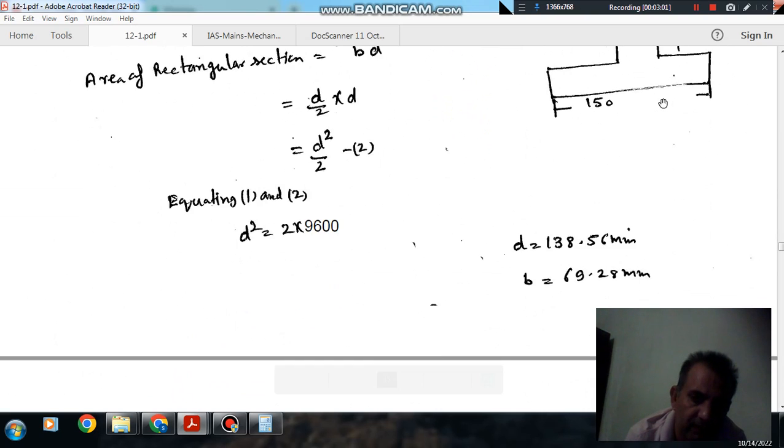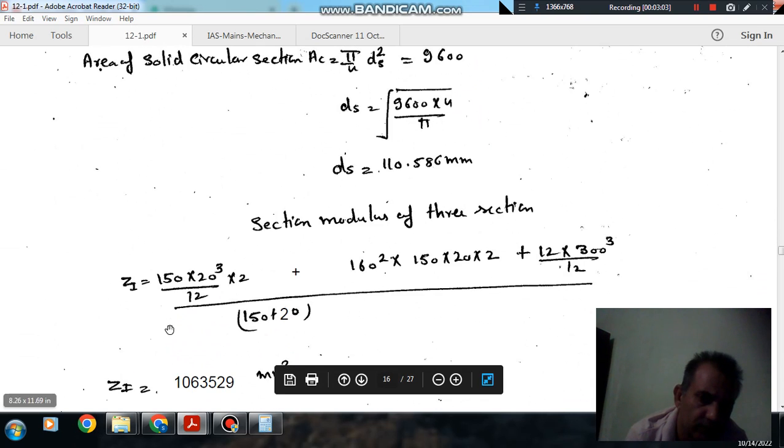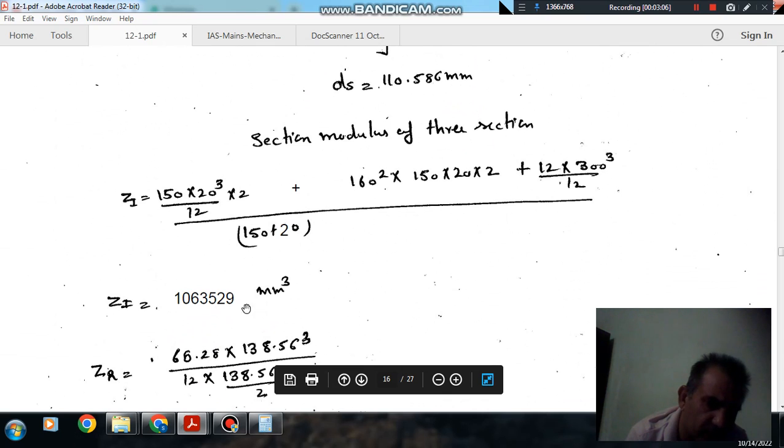So this is the moment of inertia of web, and the distance of extreme fiber from the central axis is 150 plus 20, that is 170. So Z comes out as 1,063,529 mm cube.